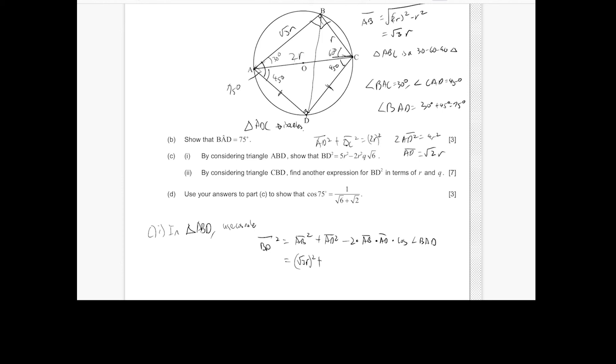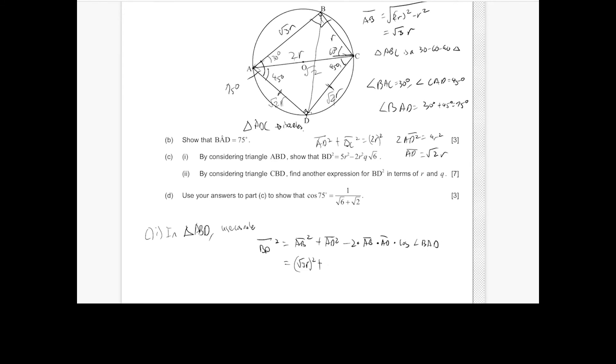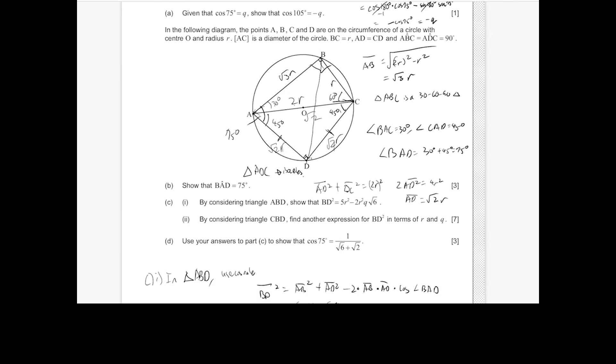This is using Pythagoras. Or we can use a 45, 45, 90 triangle relationship to show that this is 1 to 1 to root 2. So if this is 2R, this should be root 2R to root 2R to 2R. So we have root 2R squared minus 2 times root 3R times root 2R times cosine 75 degrees.